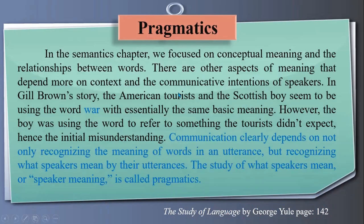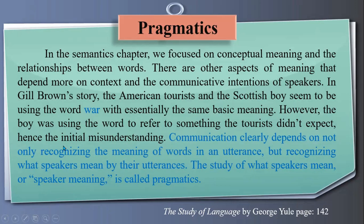Here is further text from the same book, explaining what we have already learned. In the semantic chapter, we focus on conceptual meaning and the relationships between words — meanings from the dictionary. But there are other aspects of meaning that depend more on context and the communicative intentions of the speakers. In Gil Brown's story, the American tourists and the Scottish boy seem to be using the word 'war' with essentially the same basic meaning; however, the boy was using the word to refer to something the tourists didn't expect, hence the initial misunderstanding.